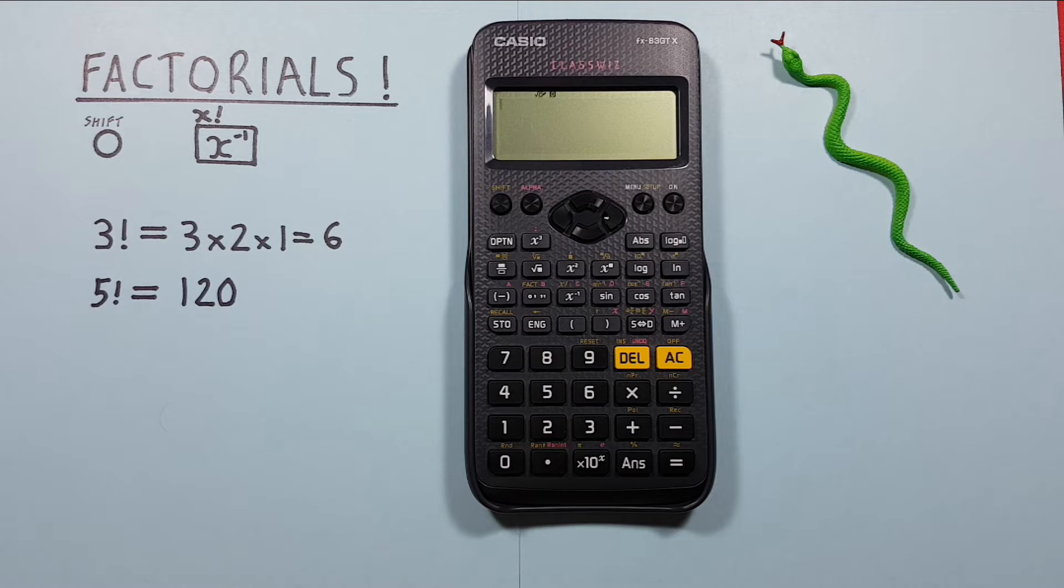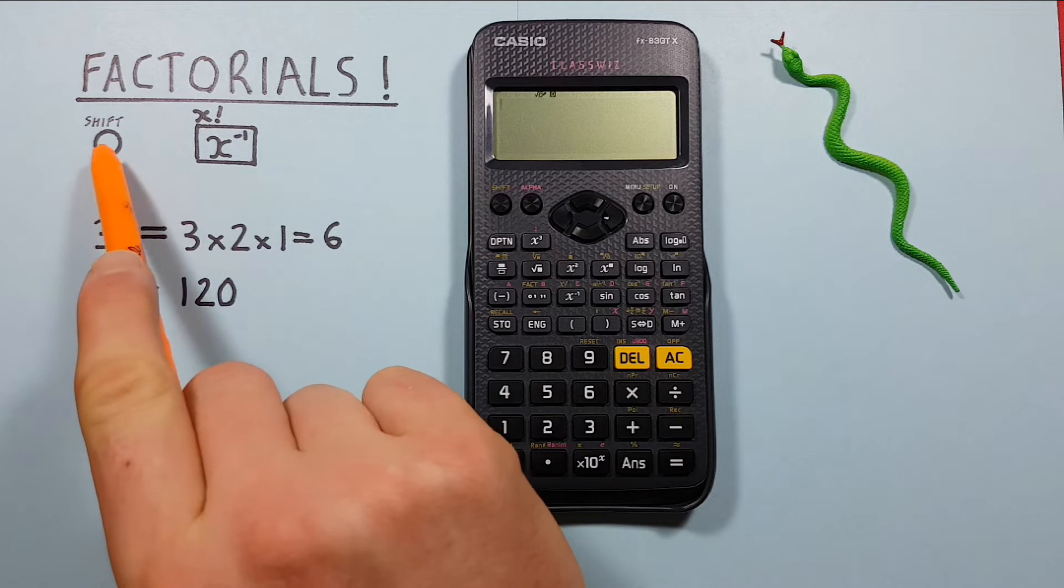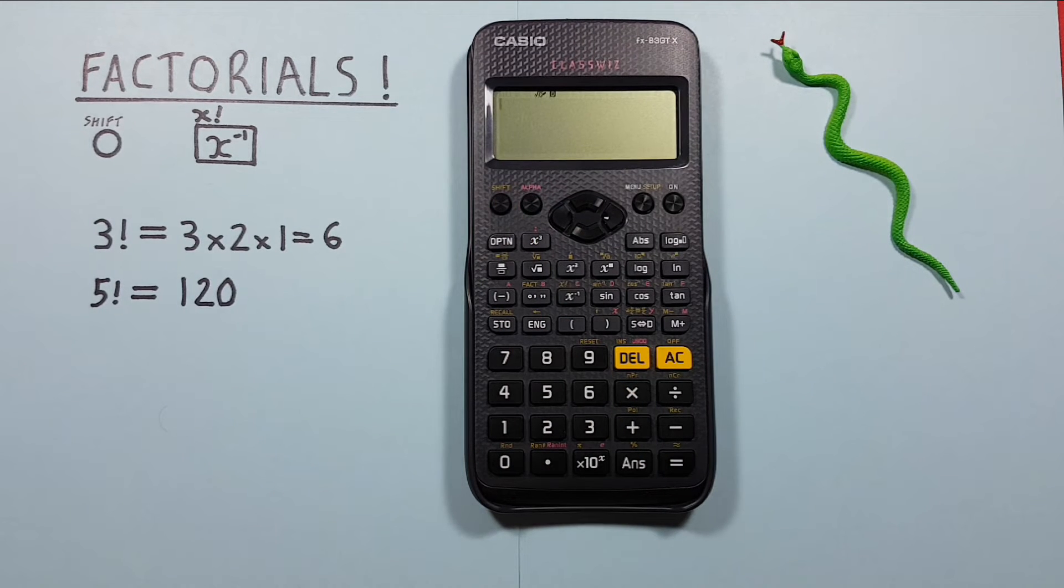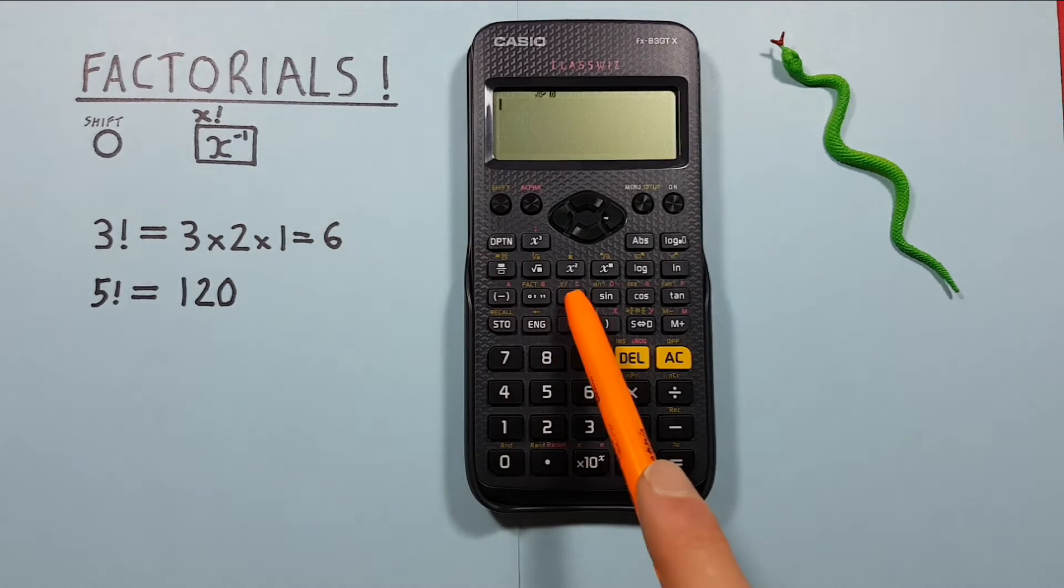To do this we'll use the shift key that looks like this located here and the x inverse key with the shift function of factorial that looks like this located here.